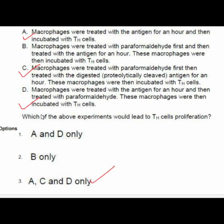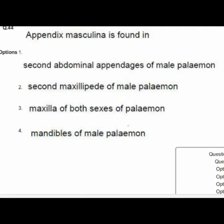Question 44: Appendix masculinia is found in — option 1 is correct — the second abdominal appendix of male Palaemon.